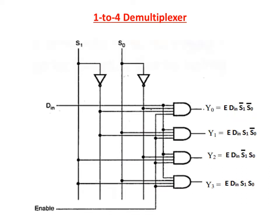This is the logic diagram for 1 to 4 D-multiplexor with active high enable input. The enable input is applied here. When the enable input is 1, all 4 AND gates receive logic 1 input, so the D-multiplexor is activated. The single input D-in is here and the selection lines S1 and S0 are here; S1 bar and S0 bar are obtained. The first AND gate output is Y0 = E · D-in · S1 bar · S0 bar, and similarly Y1, Y2, and Y3 follow.